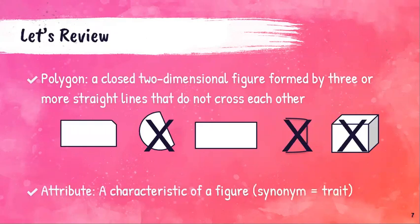Another term we need to remember is the word attribute. An attribute is a characteristic of a figure. If we think of the word trait — which we talked about a lot this year with character traits — trait is a synonym for attribute. So just as character traits were the characteristics of a character, attributes are the characteristics of a figure.